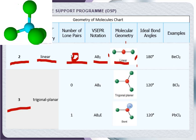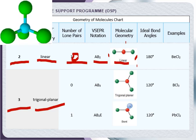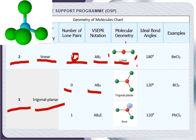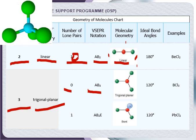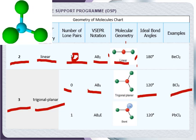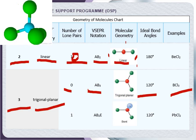When three pairs of electrons surround the central atom, the expected geometry is trigonal planar. If all three are bond pairs with no lone pairs — notation AB₃ — the bond pairs stay apart at an angle of 120° and the geometry is trigonal planar (triangular). Examples include BCl₃ and AlCl₃.